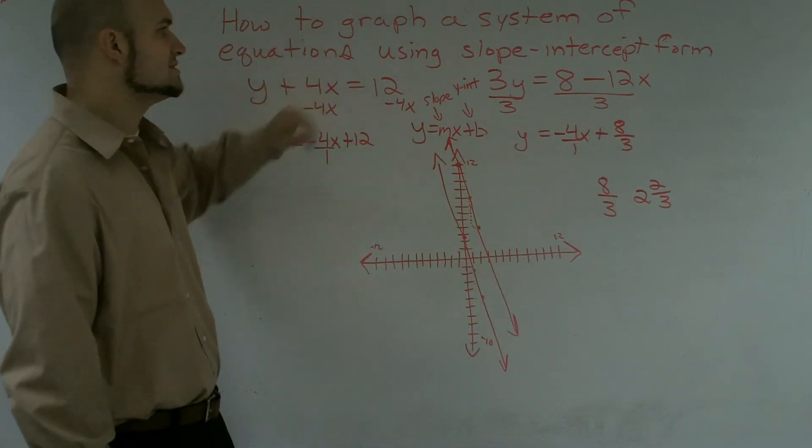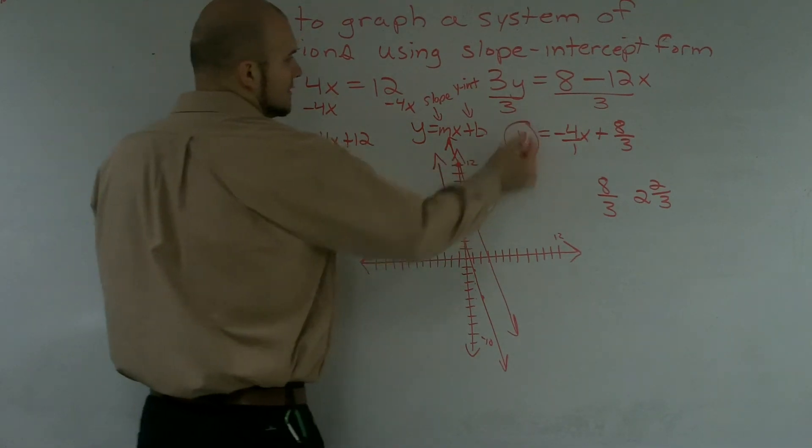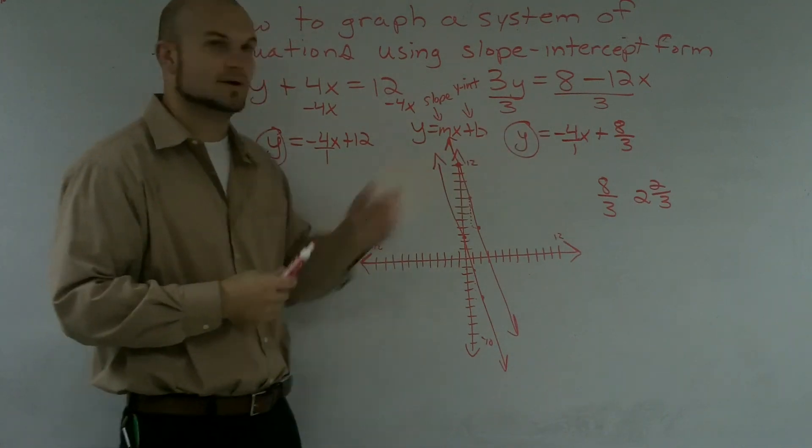So when solving an inconsistent equation by using the slope intercept form, make sure you solve for y, and then you plot the y intercept first, and then use the slope to find your next following points.